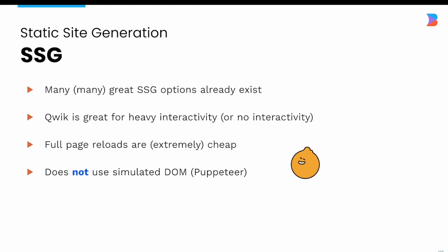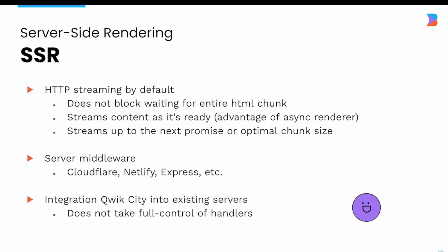Static site generation is something many great projects can already do, but where Quick is different is its ability to add a heavy amount of interactivity without a large JavaScript overhead. One reason some frameworks prefer client-side routing is because full page reloads are expensive, but because there is no hydration cost for Quick, each page load is extremely cheap no matter if it's one component or 50 components. With Quick it's still easy to create a multiple-page application while adding heavy interactivity.